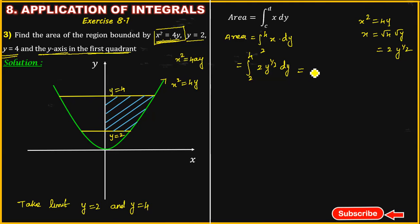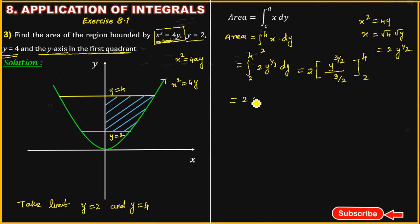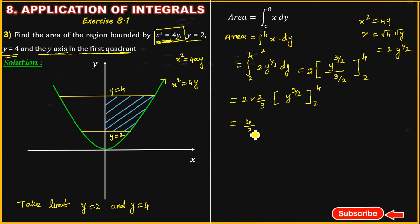Applying the integration formula for y to the power of 1/2, we get y to the power of 3/2 divided by 3/2. So the result is 2 multiplied by 2/3 into y to the power of 3/2, evaluated from 2 to 4. That simplifies to 4/3 times y to the power of 3/2, from 2 to 4.